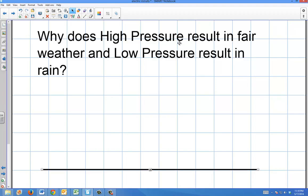How does high pressure result in fair weather, often on a weather map, and low pressure results in rain? So you've all seen on the weather maps, you have those big H's, right? The big H is the high pressure, like this.